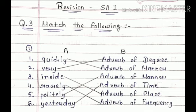Now, first is: A is quickly, very, inside, rarely, politely, and yesterday. Now we will match it with its correct kind.